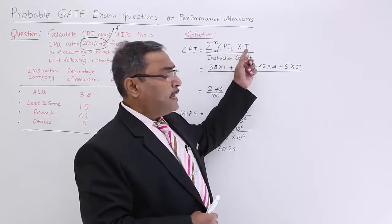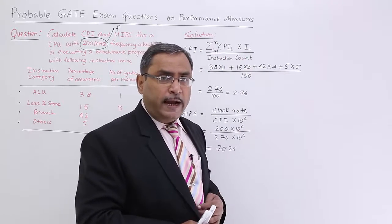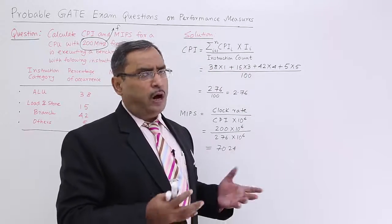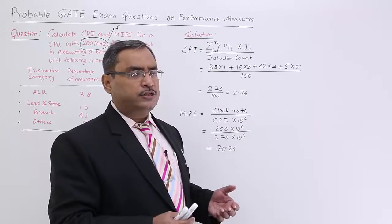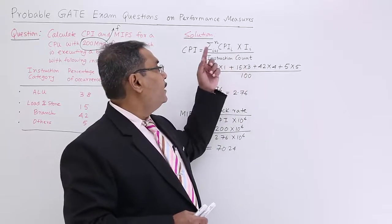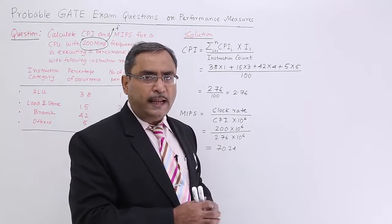That is the total cycle count you are getting for differing kinds of instructions, and then it has to be divided by instruction count, because cycles per instruction. Instruction count will be coming in the denominator, and that is the equation for the CPI calculation here.